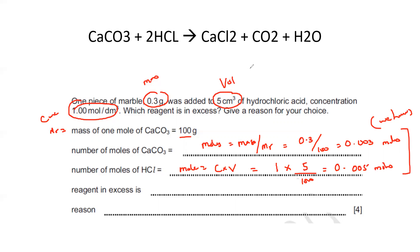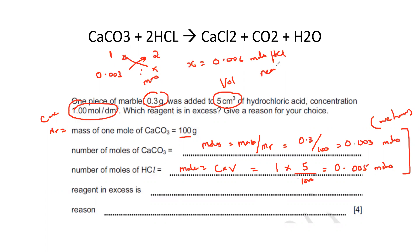Now we compare according to the equation. If we have one mole of calcium carbonate, we need two moles of HCl. So if we have 0.003 moles of CaCO₃, we cross multiply to find X moles of HCl needed. The result is 0.006 moles of HCl are needed for a complete reaction. But we only have 0.005 moles of HCl.